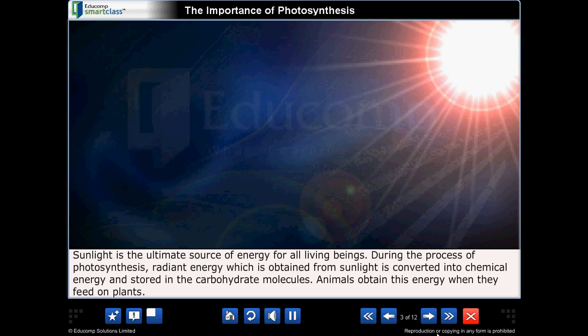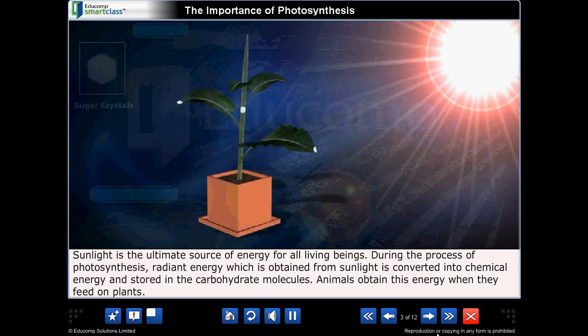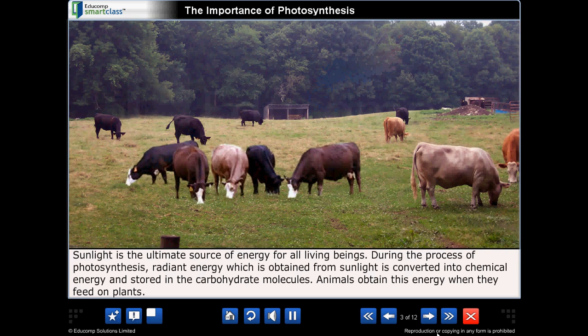These compounds provide energy to those organisms that are unable to obtain energy from the environment. Sunlight is the ultimate source of energy for all living beings. During the process of photosynthesis, radiant energy which is obtained from sunlight is converted into chemical energy and stored in the carbohydrate molecules. Animals obtain this energy when they feed on plants.